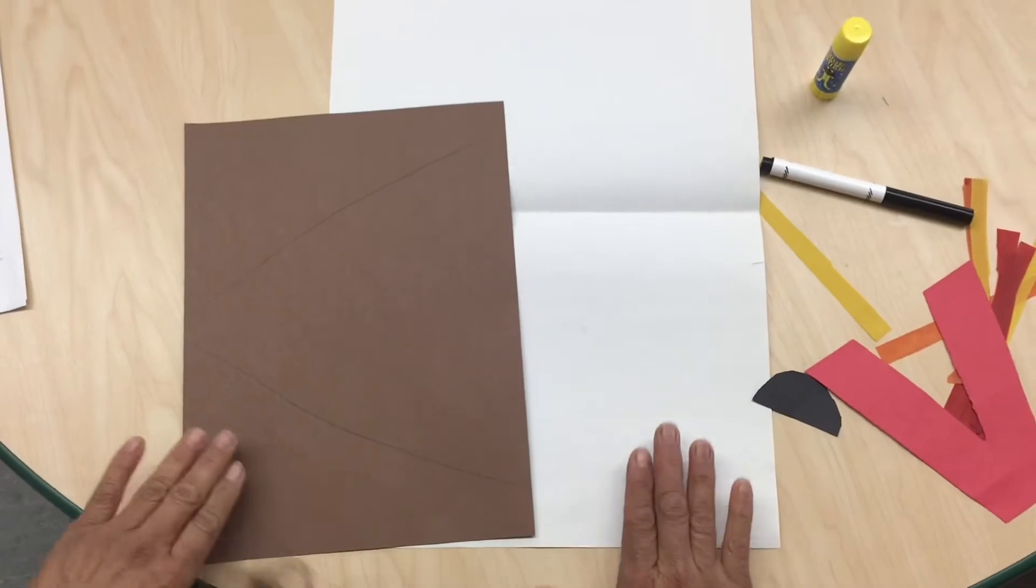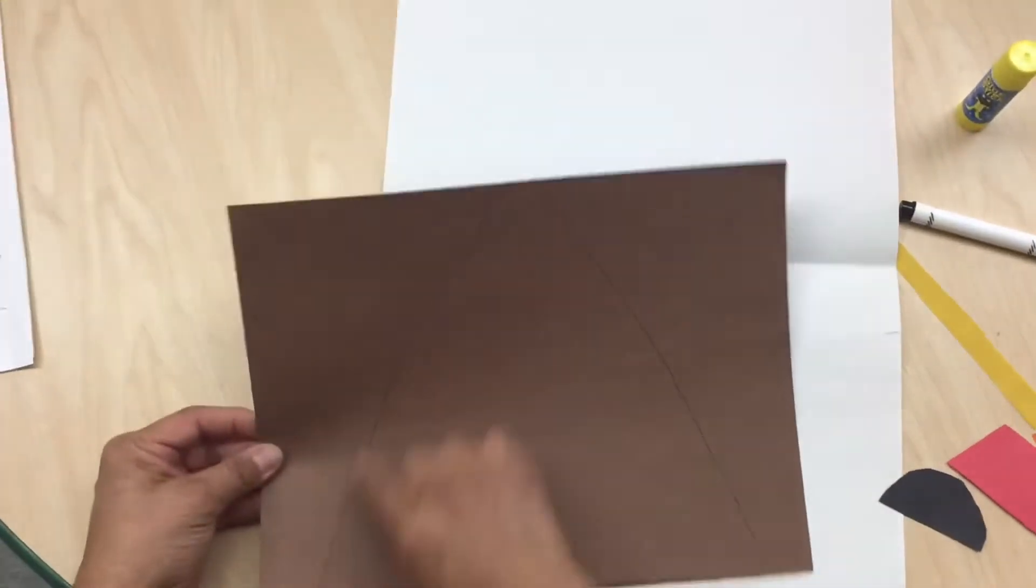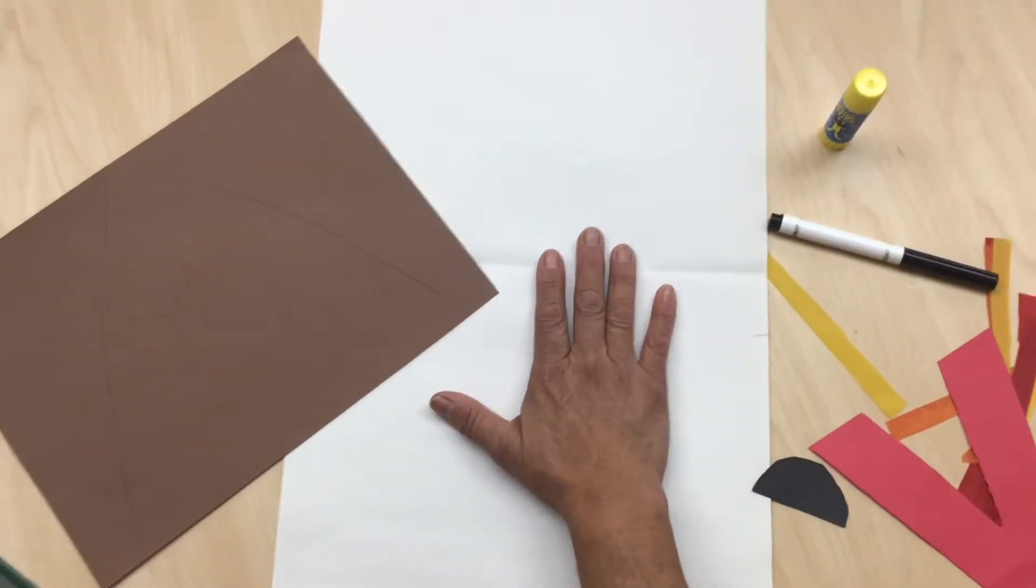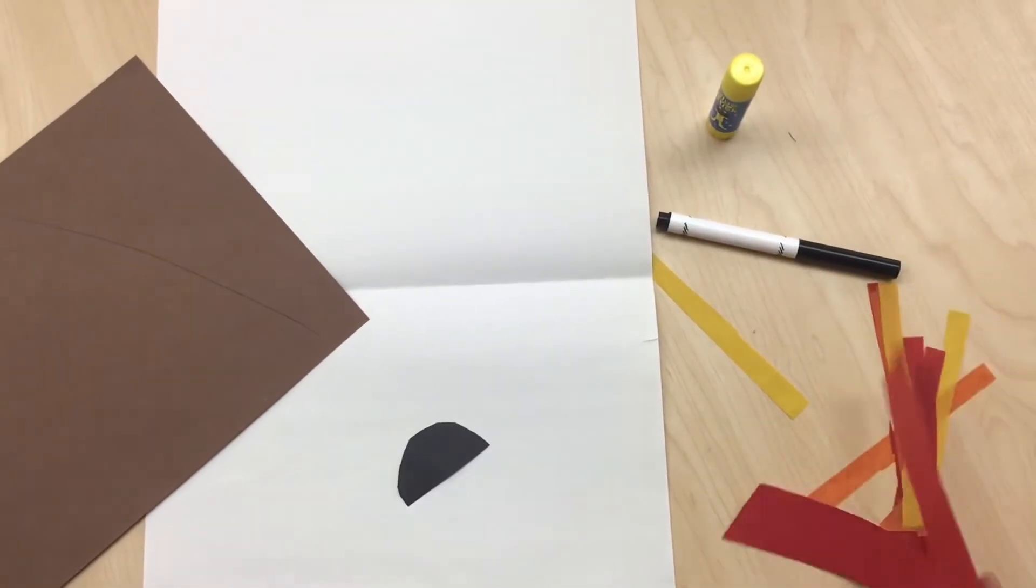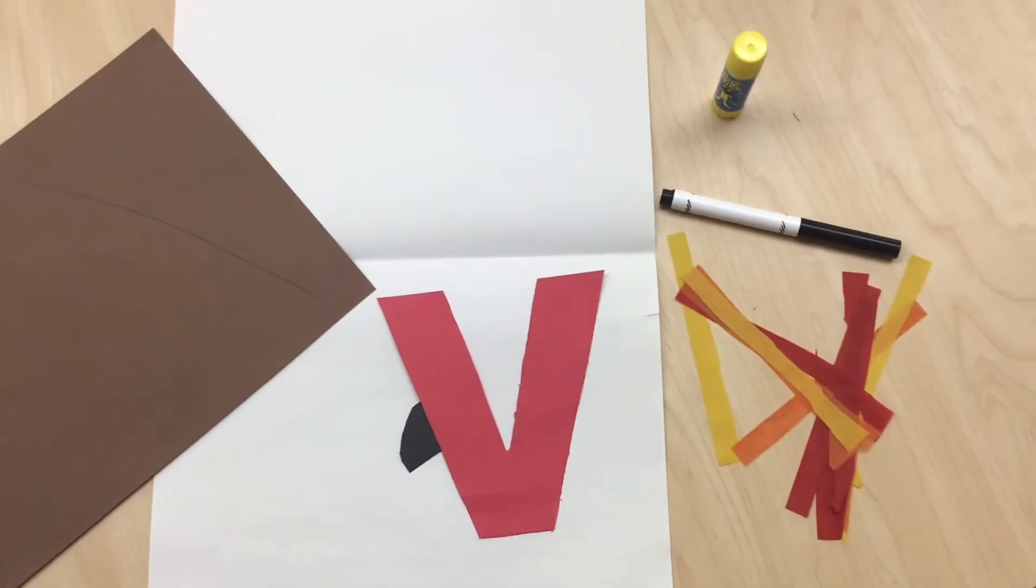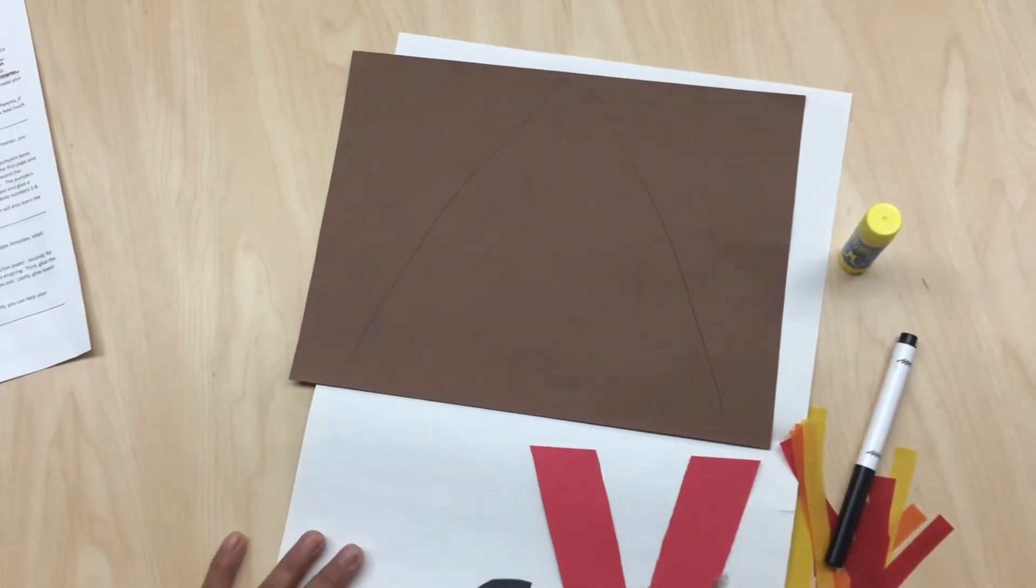For this project we're gonna need a brown triangle that we're gonna have to cut, a big white construction paper, half a circle, lowercase v, and some tissue paper - orange, yellow, and red - glue stick, and a marker.